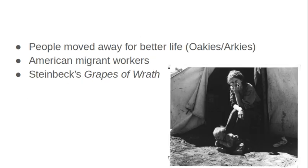Farmers weren't able to work or live under these conditions, so people started to move away for a better life. These people were called Okies and Arkies — essentially American migrant workers moving place to place in order to find work to support their families. John Steinbeck in The Grapes of Wrath describes a family doing just that.